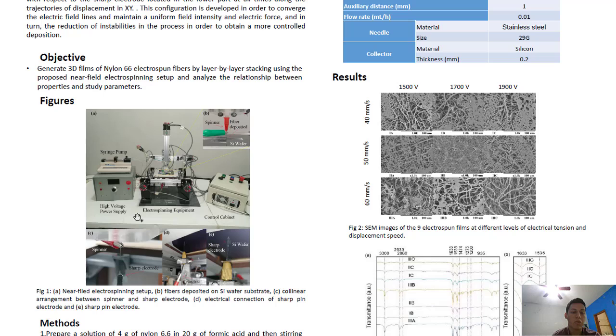Both elements are mobile and move in X-Y directions, always keeping aligned while the substrate is fixed and electrically insulated, located between the spinner and the sharp electrode.